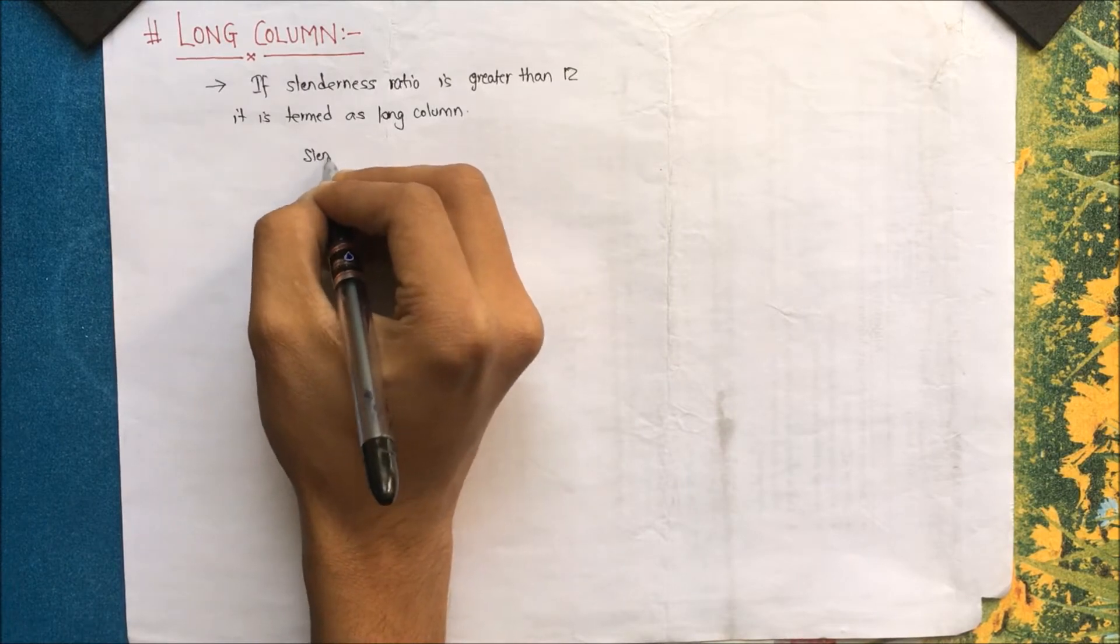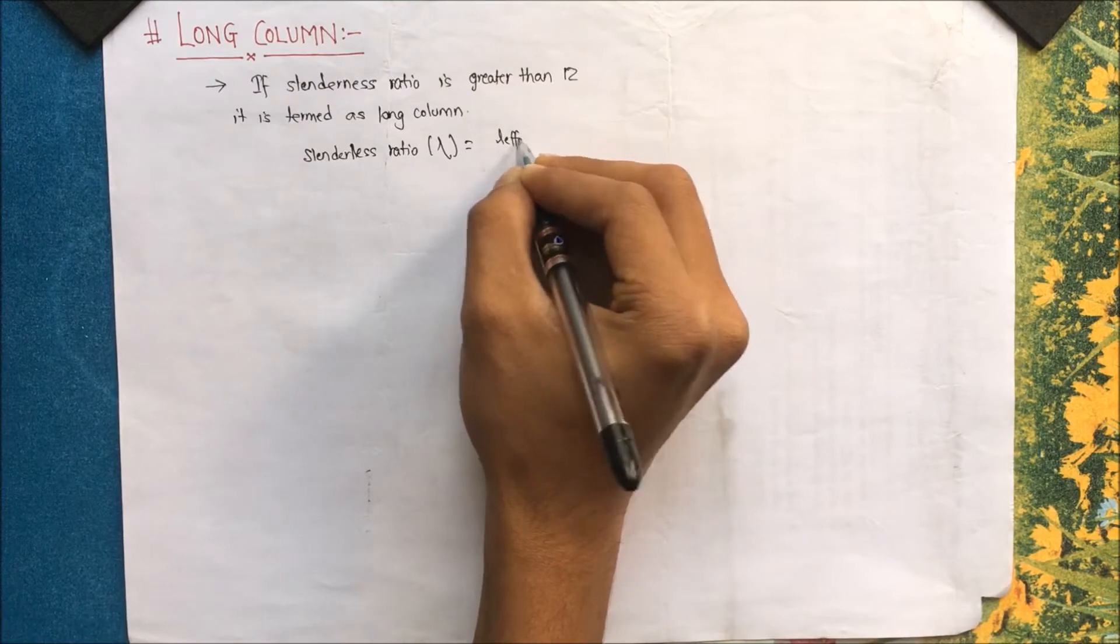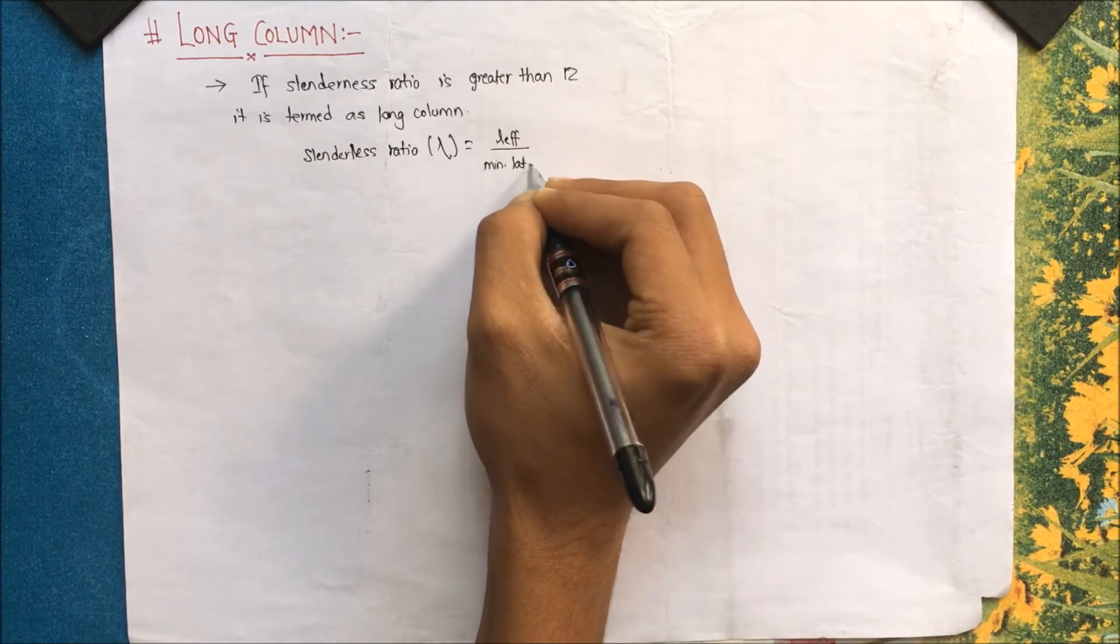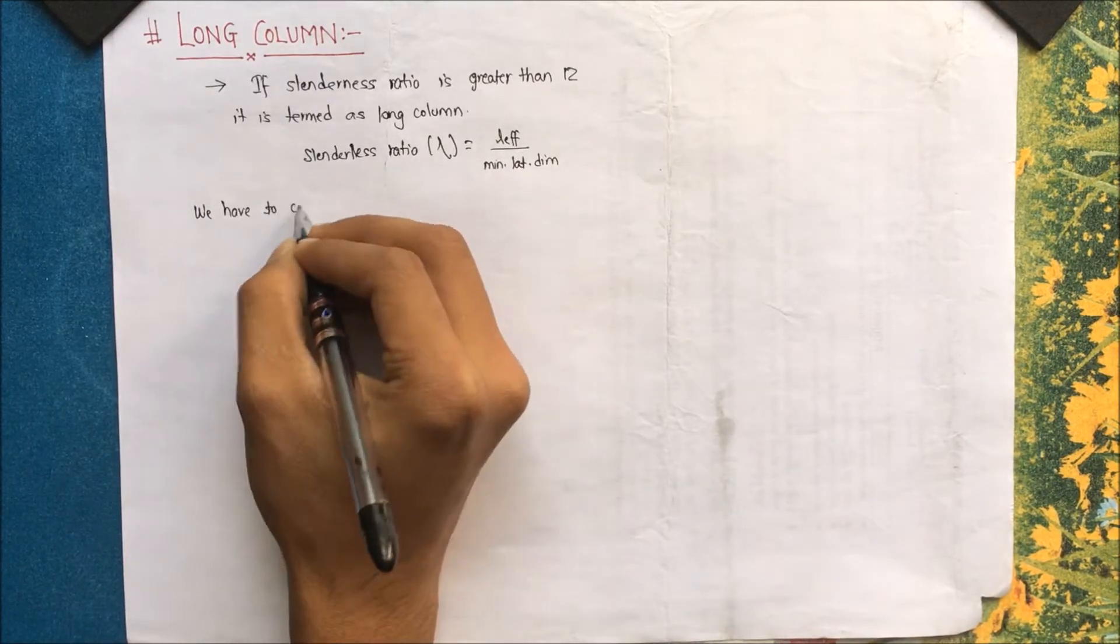Mathematically, slenderness ratio is represented as lambda equals L effective divided by minimum lateral dimension. A column will have two dimensions on x and y axis, so taking the minimum value.